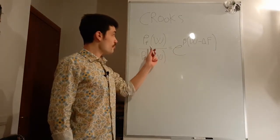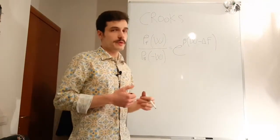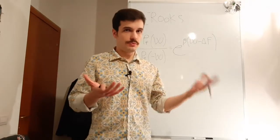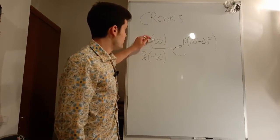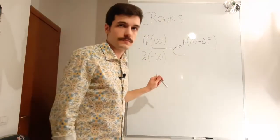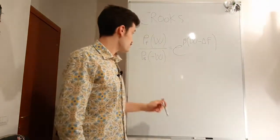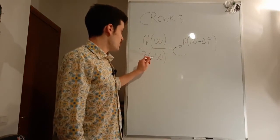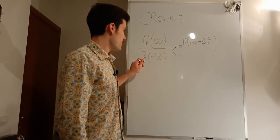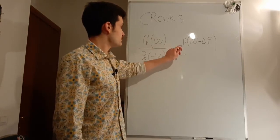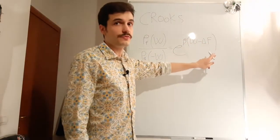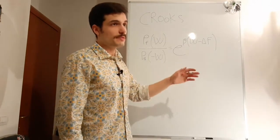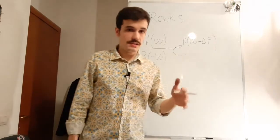They are called the Crooks and Jarzynski theorems. In the Crooks theorem, we are considering both the forward and the backward transformation — from A to B and from B to A. We are saying that the probability of generating the quantity of work W in the forward transformation, divided by the probability of using minus W work in the backward transformation, is equal to e raised by beta times W minus delta F.